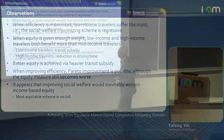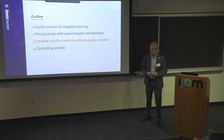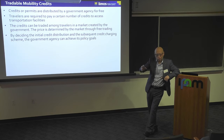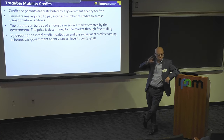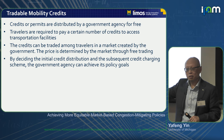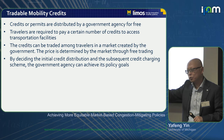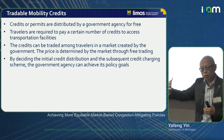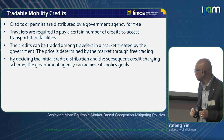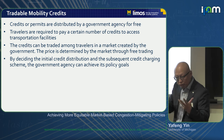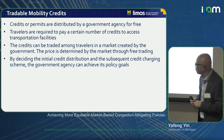Tradeable mobility credits: the government distributes credits for free to travelers. Travelers are required to spend credits to access facilities. If users do not use up their credits, they can go to the market to sell them. The market is created by the government, but the government does not intervene in trading. If you don't have enough credits but want to travel, you go to the market to purchase from other travelers. The price of credits is determined through free trading. By deciding the initial allocation and how to charge credits, the government can achieve policy goals.